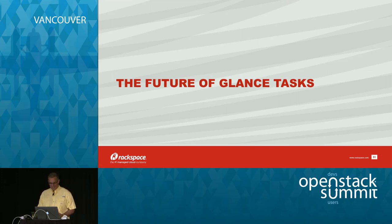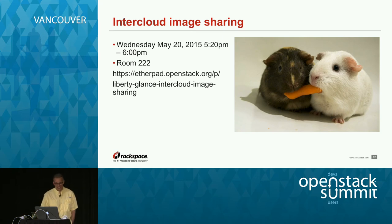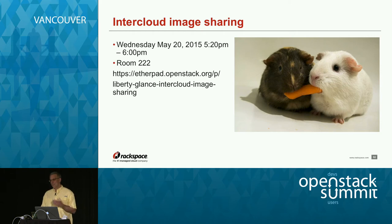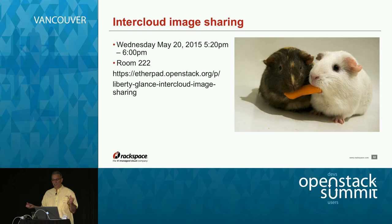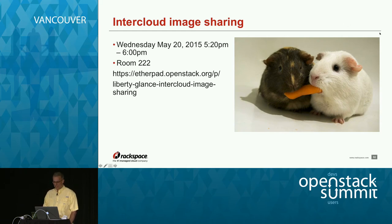Talking a bit more about the future of Glance tasks: there's a session on inter-cloud image sharing happening today at 5:20 in room 222. The basic idea is to be able to move images from cloud to cloud. This is obviously a good use case for tasks — you don't want to try to boot from another cloud by pulling stuff over the public internet. You want to actually get the image over first, and then once it's in the cloud you're booting servers from, away you go.